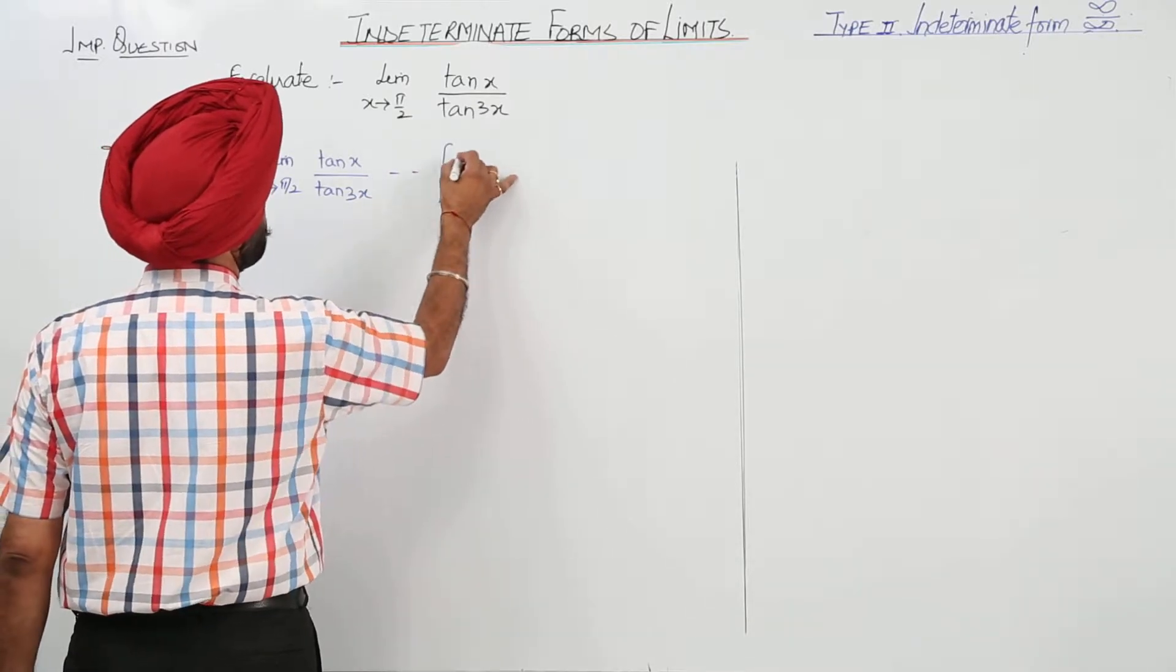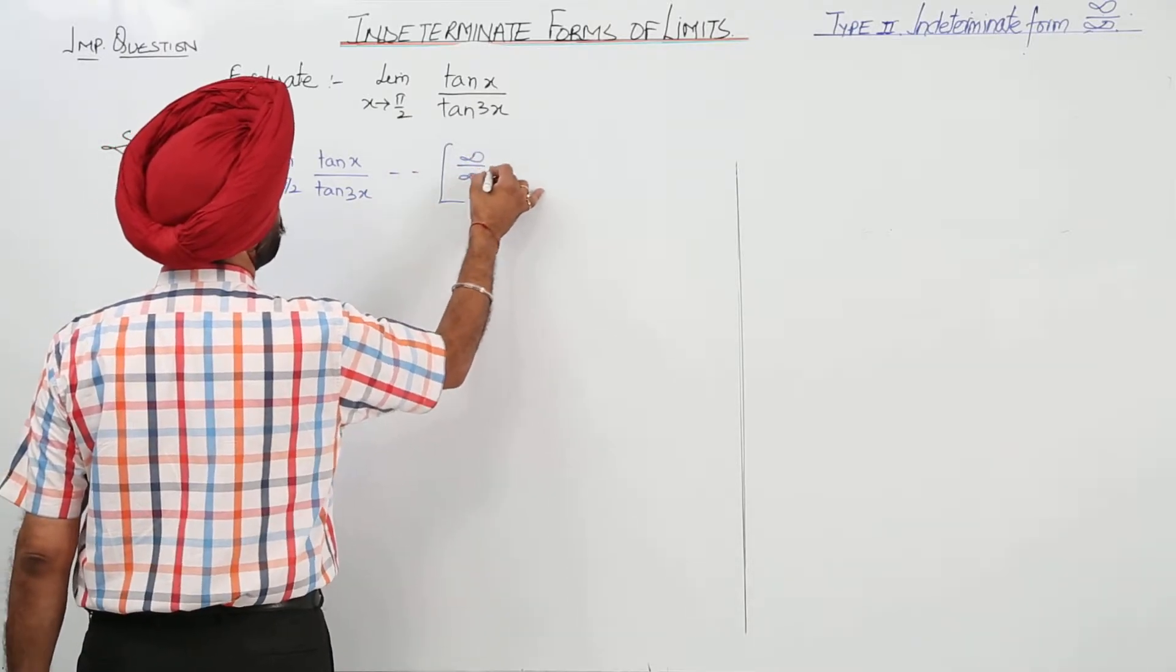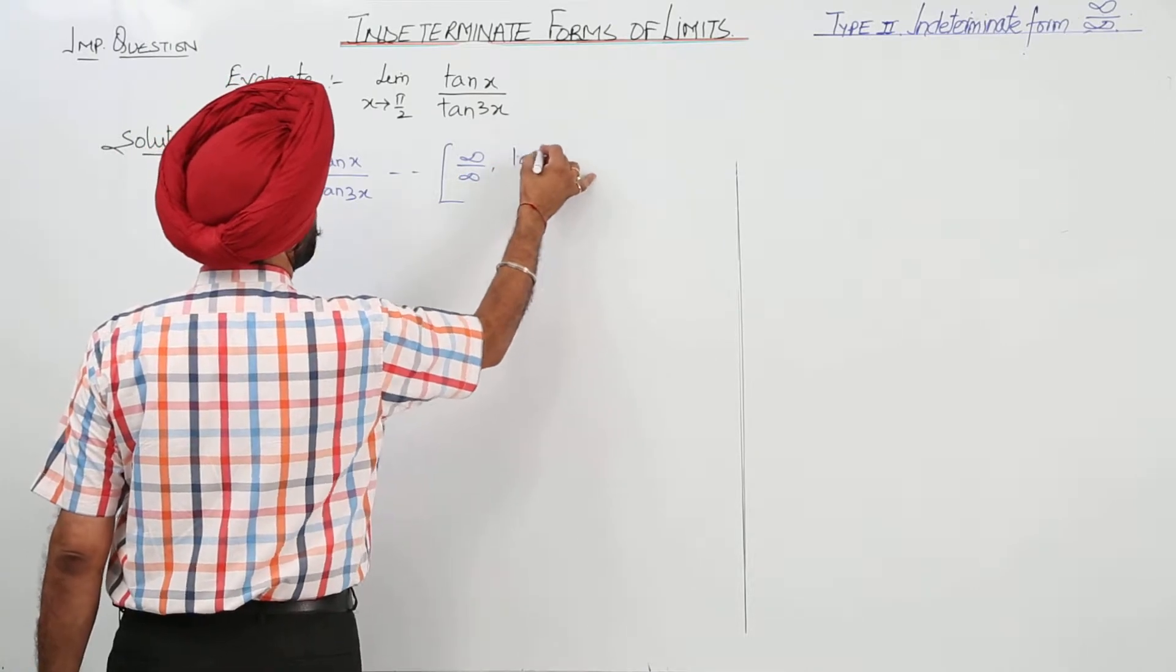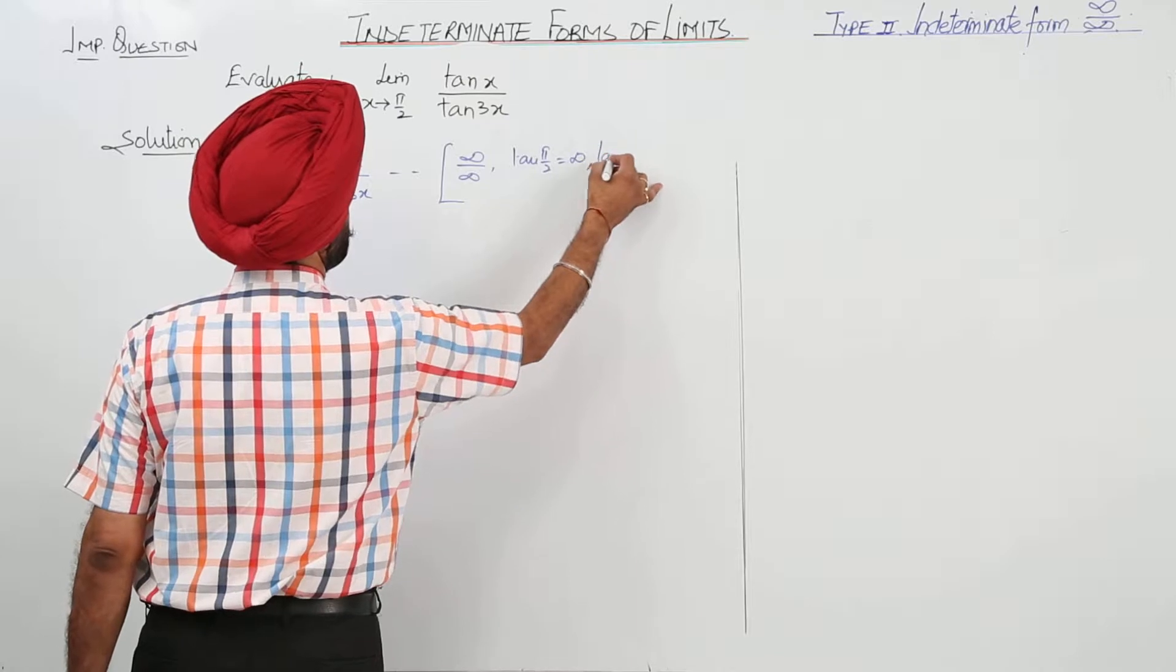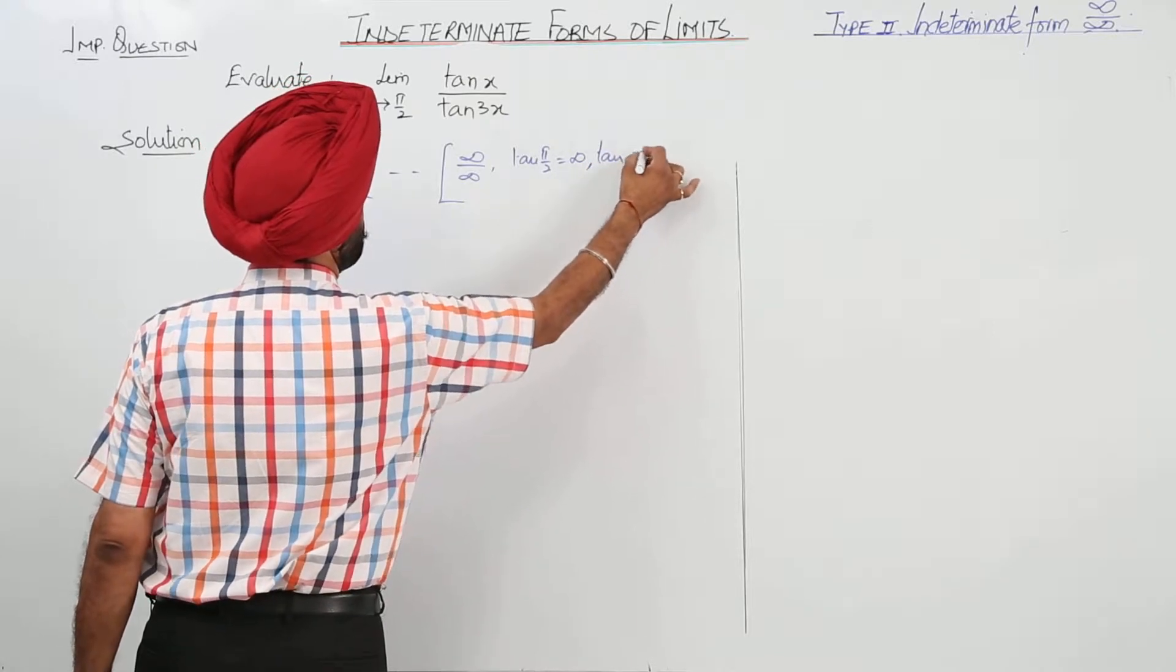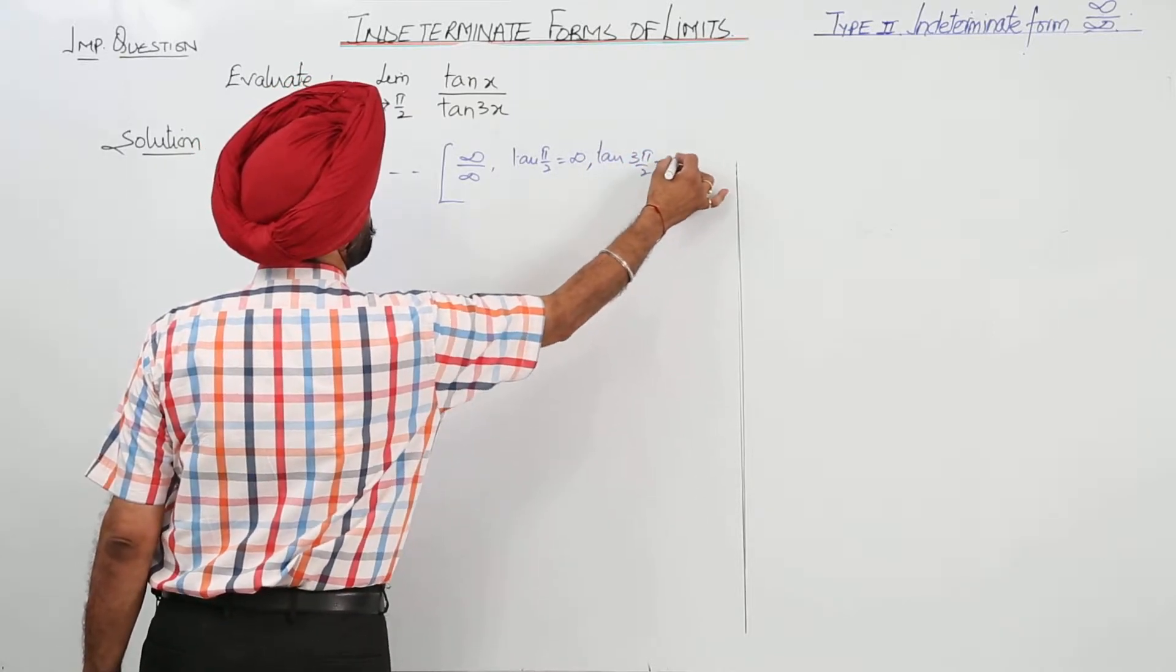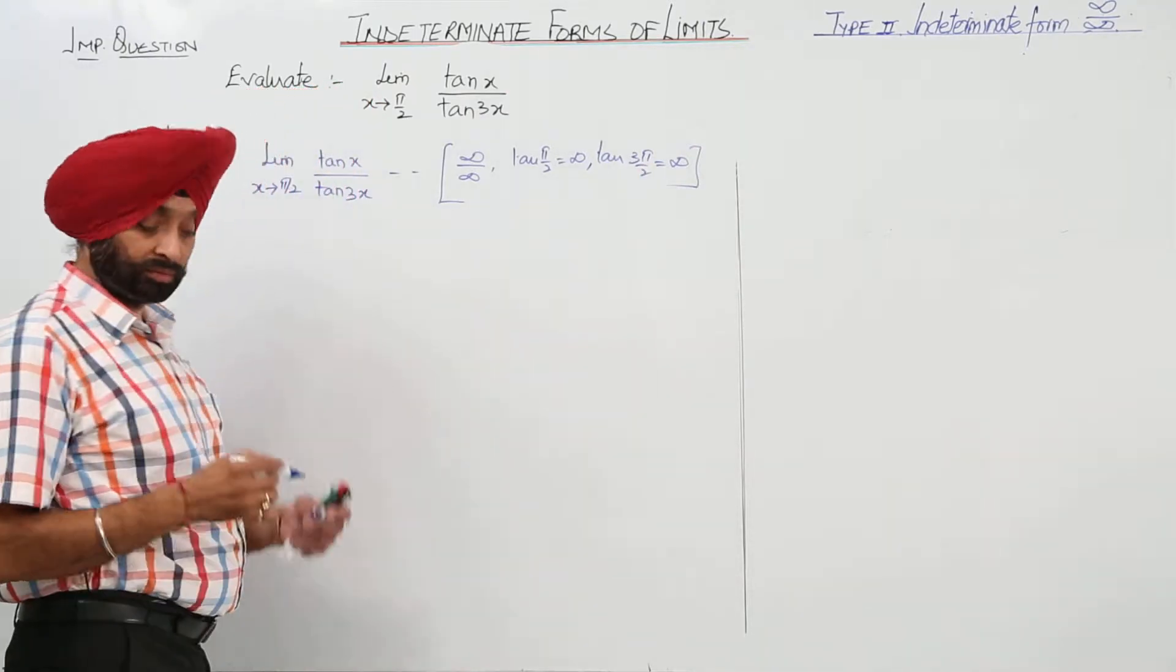Now, this becomes infinity upon infinity. Why? Because tan π/2 is infinity and tan 3π/2 is also equal to infinity. Is it clear?